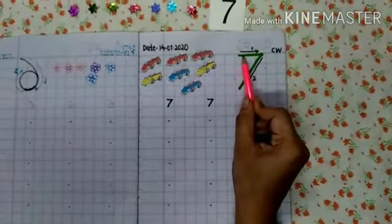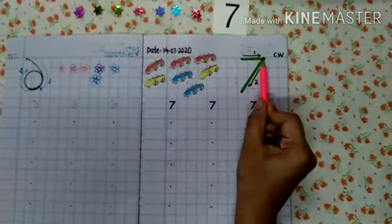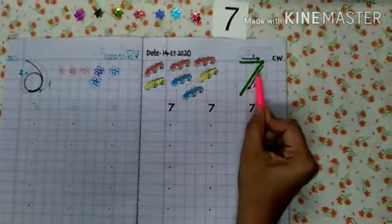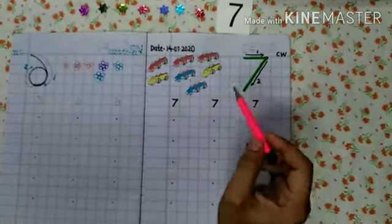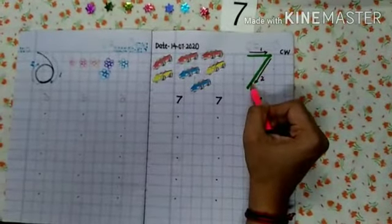So, let's start. First, you have to make one slipping line. First step. Then, second step. Slanting line. First step. You have to make one slipping line. Then, slanting line.